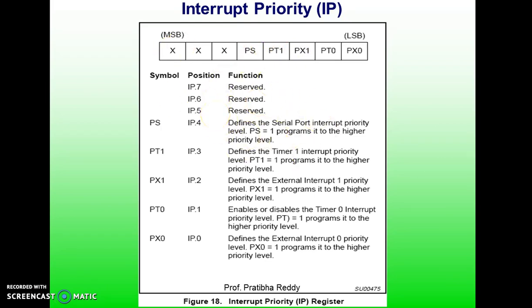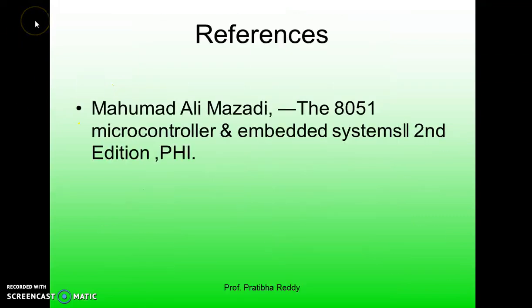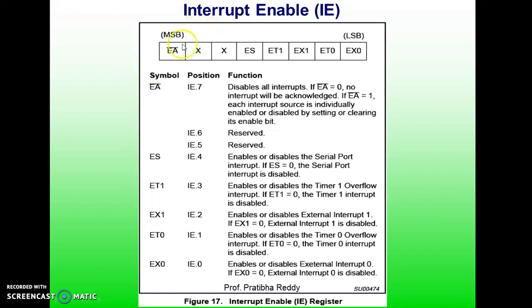Interrupts execute according to their priority levels. Coming to the interrupt enable register — the IE register. This IE register is used for enabling and disabling interrupts. Upon reset, all interrupts are disabled, meaning none will be responded to by the microcontroller if activated. The interrupts must be enabled by software in order for the microcontroller to respond to them. The IE register is responsible for masking and unmasking the interrupts.